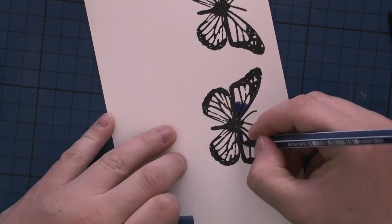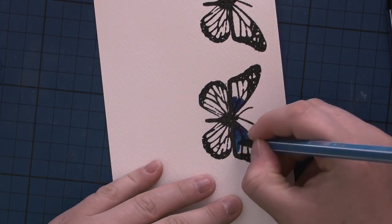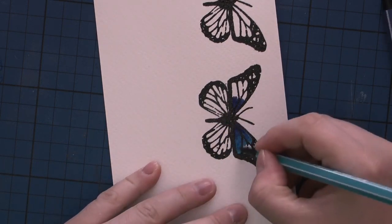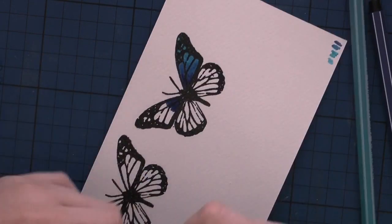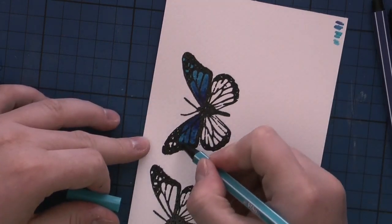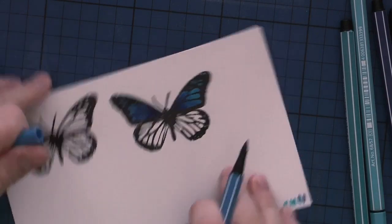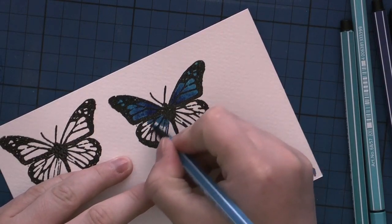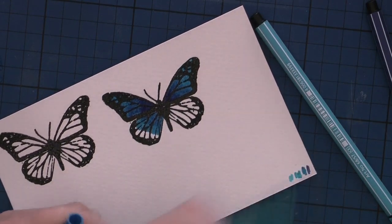Now I'm coloring the butterfly using my Stabilo 68 pens. I really love these pens; they work perfectly with or without water. If you would like to blend them without water, it's best to use heavy watercolor cardstock, and with water just any watercolor cardstock works perfectly.